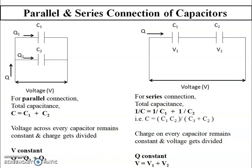Now let's understand series and parallel combinations of capacitors. As shown in the figure on the left, we have two capacitors C1 and C2 connected in parallel across a voltage source V. Since these capacitors are connected in parallel, the charge gets divided into Q1 and Q2. In a parallel connection, total capacitance is the sum C = C1 + C2, while the voltage across every capacitor remains constant. So charge gets divided and voltage remains constant in a parallel combination.